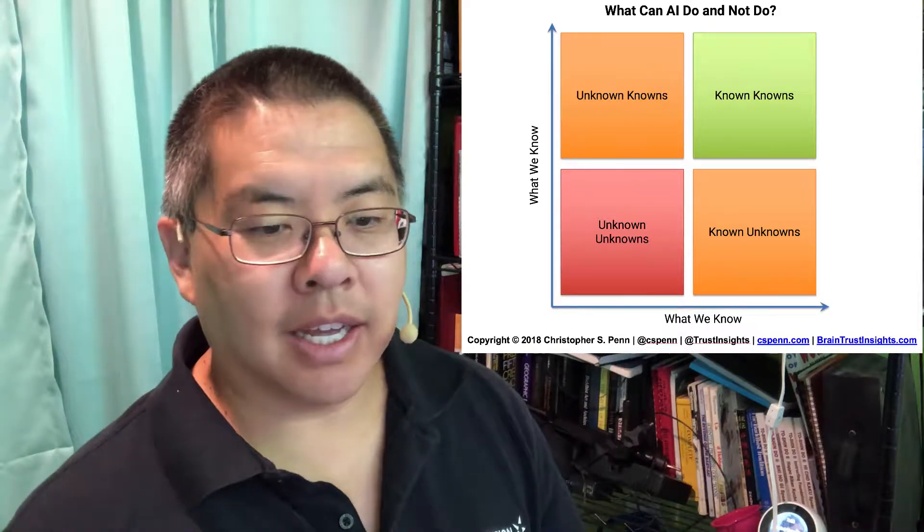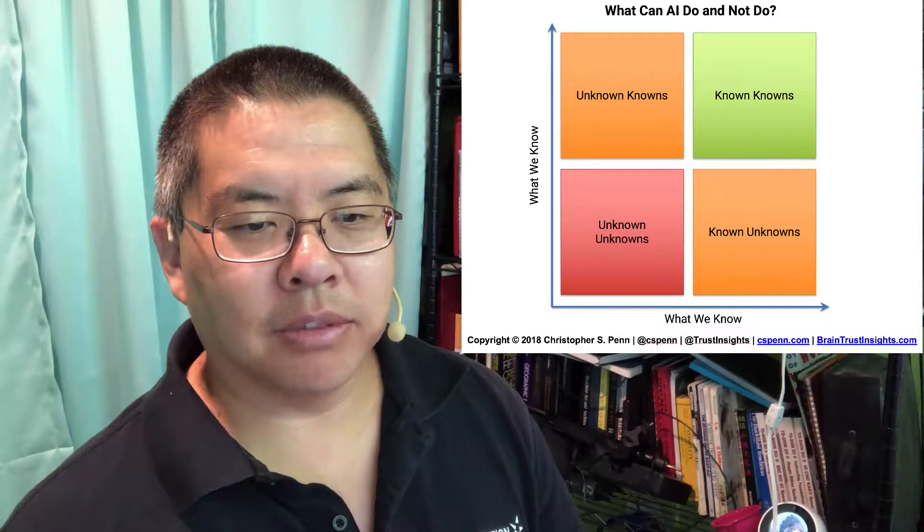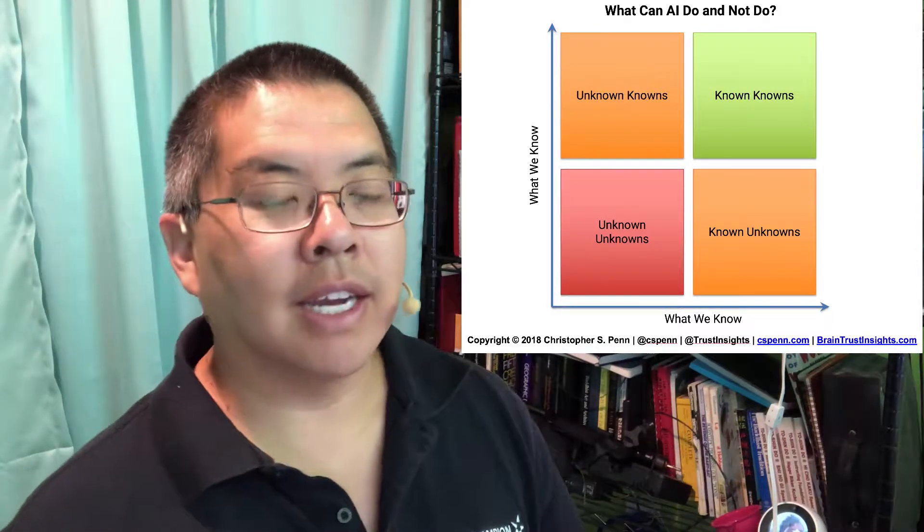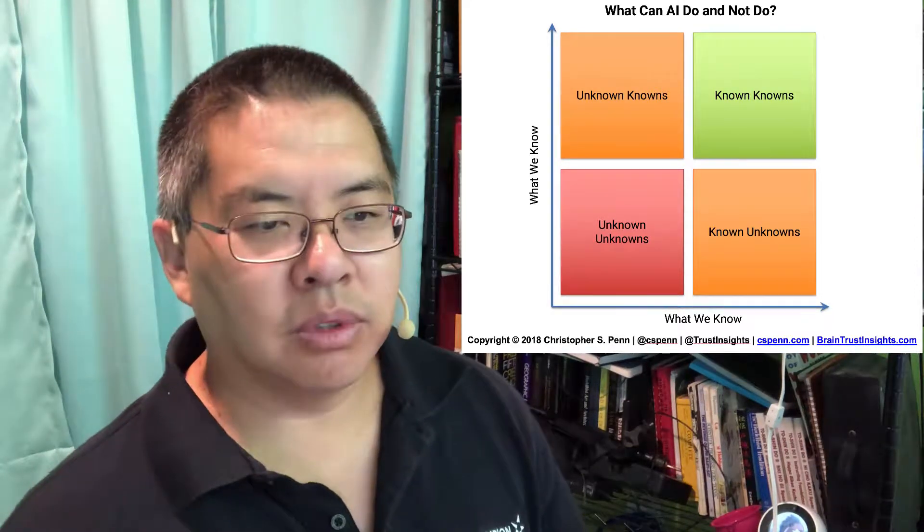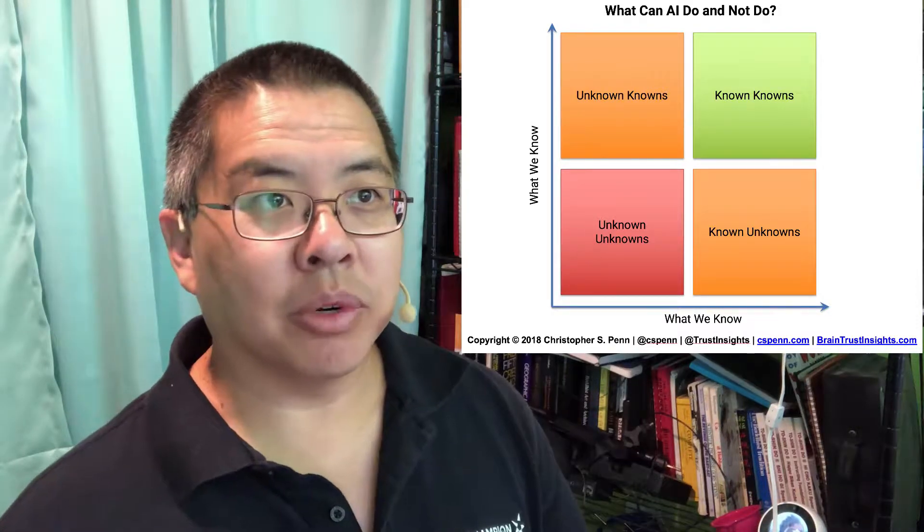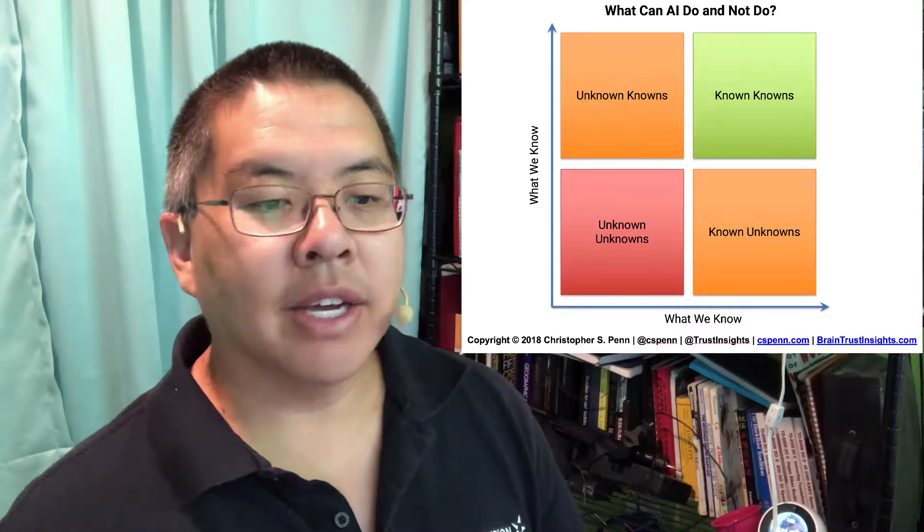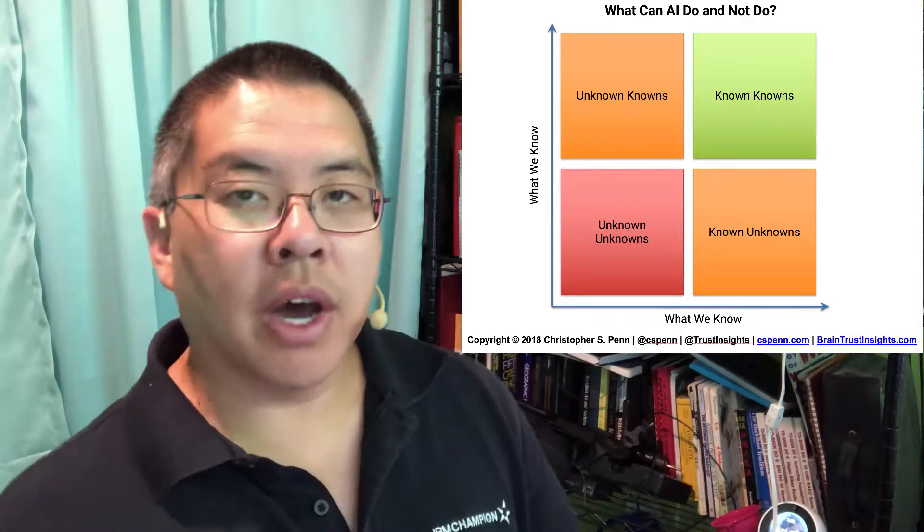Where you know how to get there and you know the destination, that's something that you may not even necessarily need AI for. But in this example, knowing where you're going but not knowing how to get there is the known unknown.